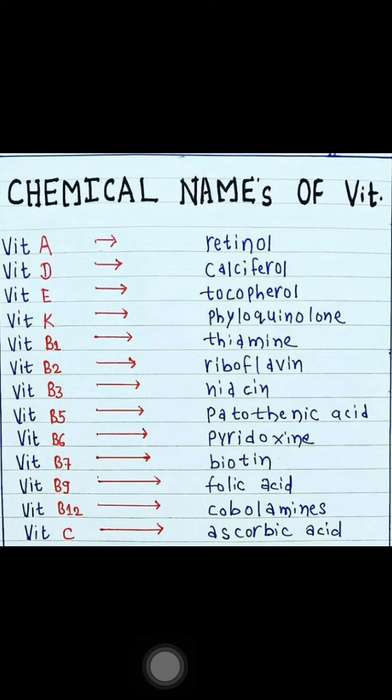The chemical name of Vitamin B6 is pyridoxine. The chemical name of Vitamin B7 is biotin.